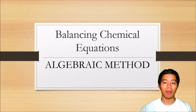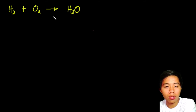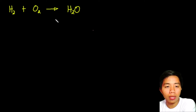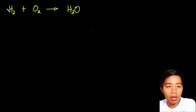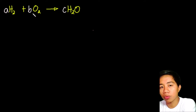Let us discuss how to use this method. So let's have here our first example: H2 plus O2, that will yield into H2O. As we can see, the number of oxygen atoms on the reactant side is not equal to the number of atoms of oxygen on the product side. So the first step in balancing a chemical equation using the algebraic method is to represent the unknown coefficients with letters. For this example, let us use the letter coefficient A, B, and then C. Letter A represents the coefficient of H2, B represents the coefficient of O2, while C represents the coefficient of H2O.